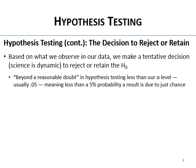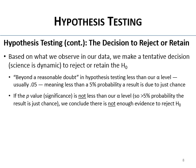'Beyond a reasonable doubt' in hypothesis testing means less than our alpha level — usually 0.05 — meaning there's less than a 5% probability our result is due just to chance. If the p-value is not less than alpha, that's greater than a 5% probability the result is chance, and we say there's not enough evidence to reject the null. It's like just knowing someone's in the neighborhood of the crime — that's not enough. You need the tape, the DNA, the stolen goods — then you say yeah, probably guilty.